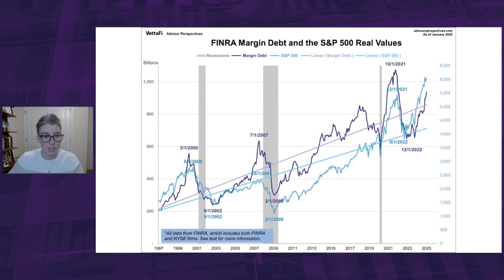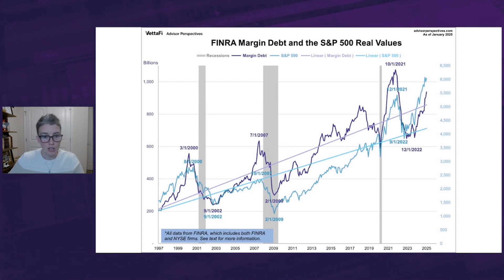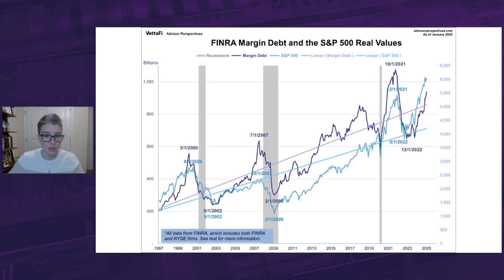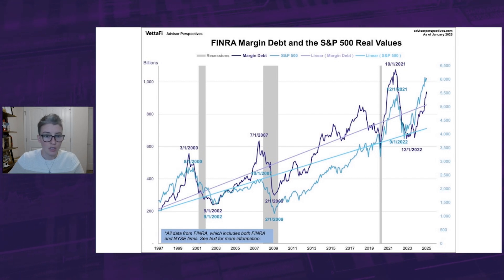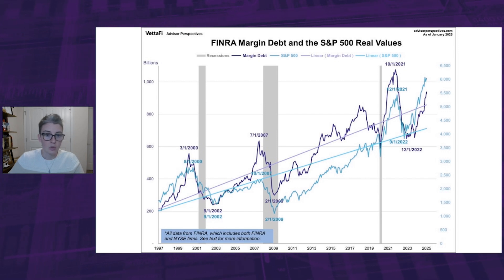As of January, the debt level stands at $937.25 billion, a 4.2% monthly increase and a 33.5% annual increase. However, when adjusted for inflation, those numbers are reduced slightly to 3.6% and 29.6% respectively. Real margin debt remains 13% below its 2021 record high.